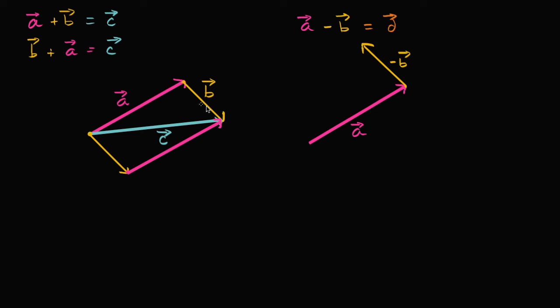So that is negative B. Notice, same magnitude, exactly opposite direction. We flipped it around 180 degrees, and now the resulting vector is going to be D. So vector D is going to look like that. Vector D. So C is A plus B. D is A minus B. Or you could even call this A plus negative B.